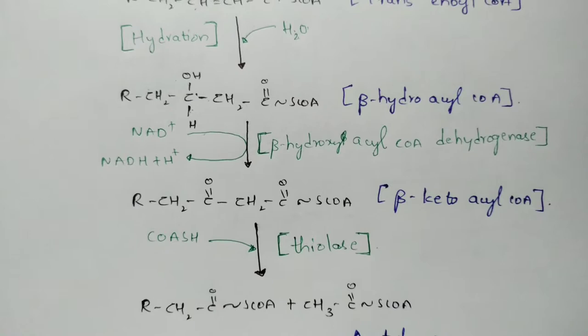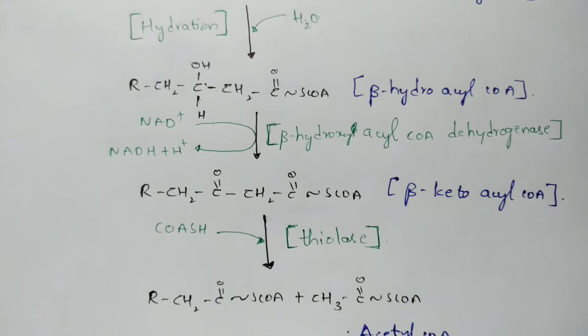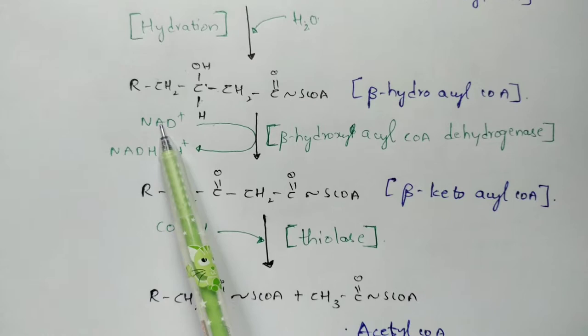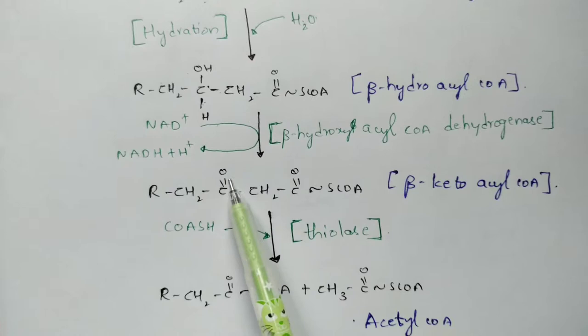Beta-hydroxyacyl-CoA forms beta-ketoacyl-CoA with the help of the enzyme beta-hydroxyacyl-CoA dehydrogenase. Again the dehydrogenase enzyme is utilized, so two hydrogen atoms are released. NAD⁺ energy is used, and the two hydrogens are released — one from the carbon and one from the OH group — forming a keto group, hence the name beta-ketoacyl-CoA.